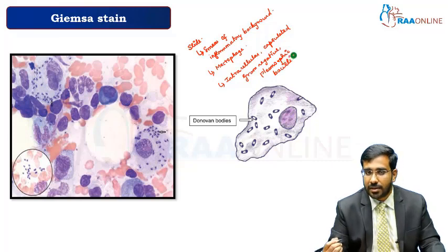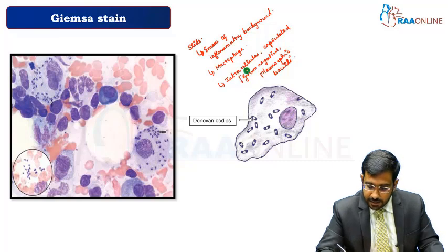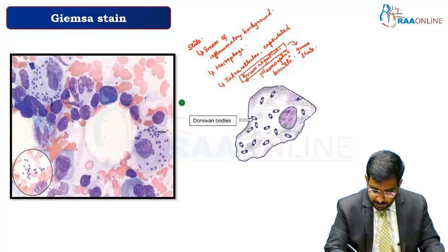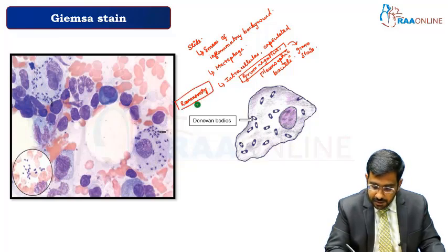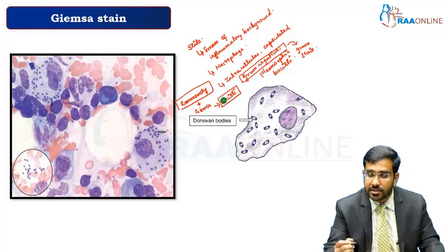Whenever we are going to talk about the gram stain, in case of Giemsa it is going to be always only the particular past life. The gram-negative terminology we should use only if we are going to use gram stain. The stain used here is going to be the Romanowski stain, and the example for Romanowski stain is the Giemsa stain. So we should not comment about gram for Giemsa stain.